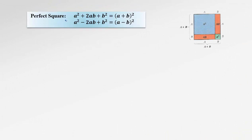The next very important formula, something that you must remember, is called the perfect square. It comes from squaring a binomial, either the sum a plus b or the difference a minus b. We already foiled these two examples in a previous video and experienced this formula. Now we need to be able to recognize the pattern of a squared plus or minus 2ab plus b squared in order to fold it back to the perfect square.